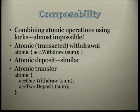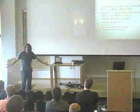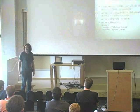I didn't explain the solution yet. With STM, withdrawal is just: atomic block, account.withdraw(sum) — that's an atomic withdrawal. If you want to deposit, atomic block, account.deposit(sum). And if you want to move between two accounts, you open one atomic block and say: account1.withdraw, account2.deposit, end of transaction. That's it.